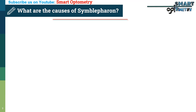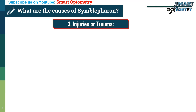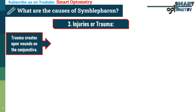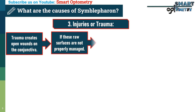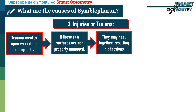3. Injuries: trauma creates open wounds on the conjunctiva. If these raw surfaces are not properly managed, they may heal together, resulting in adhesions.